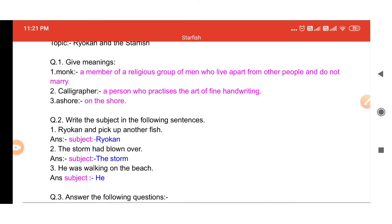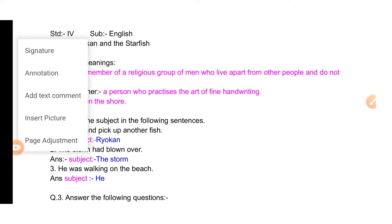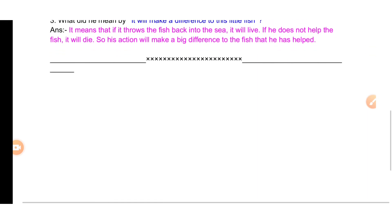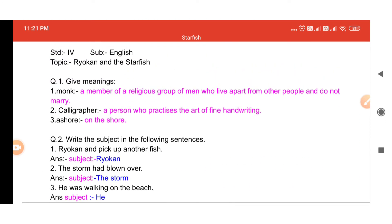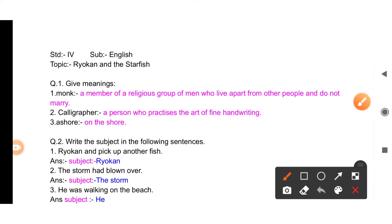We will first start with 'Give Meanings.' You have to remember that whatever questions, answers, and give meanings are there, you have to remember very clearly — this can come in the exam. It is a poem, so please be careful. Give meanings first: what is the meaning of 'monk'? Monk ka matlab kya hota hai — monk, jaise ki Hindi mein hum bol sakte hain, pandit.